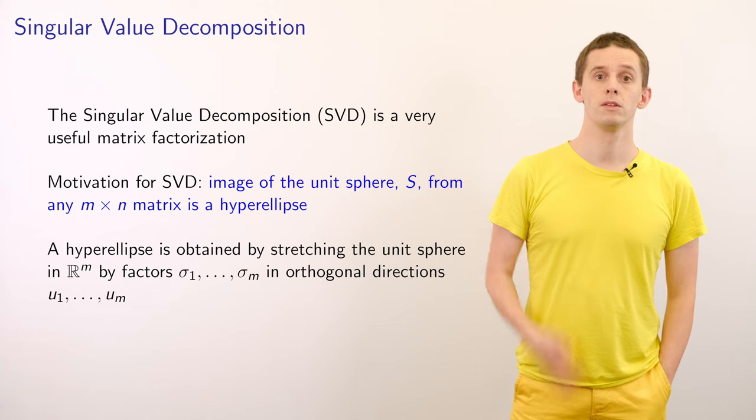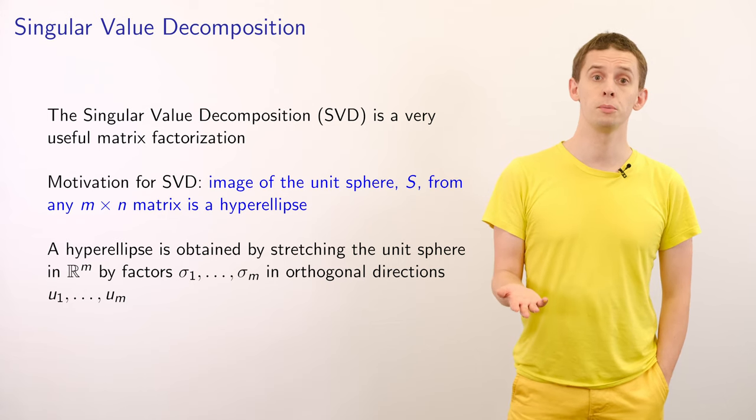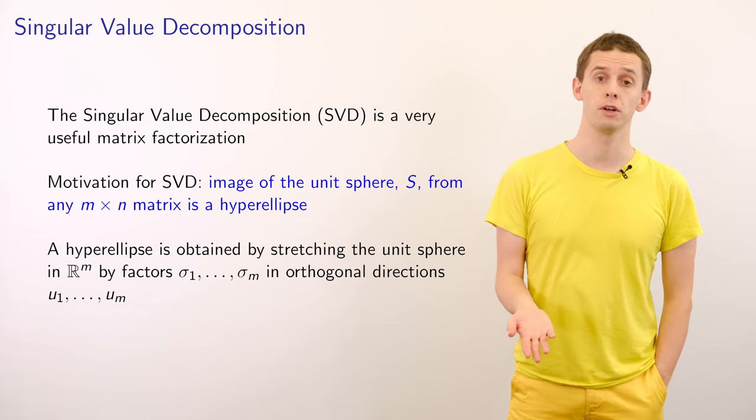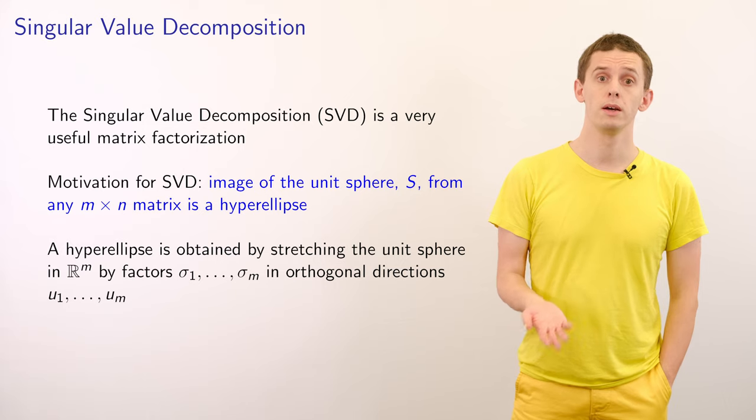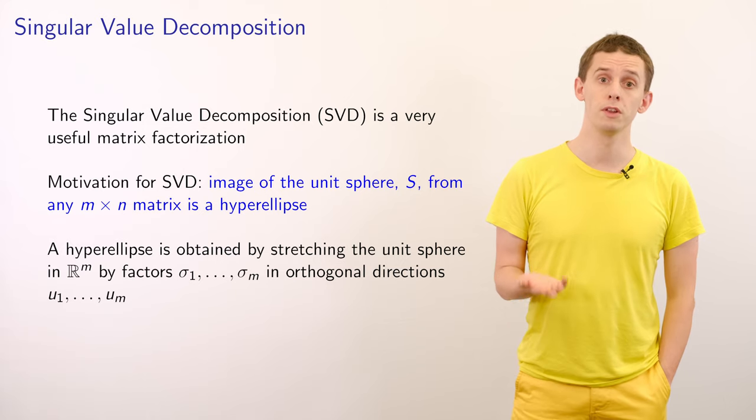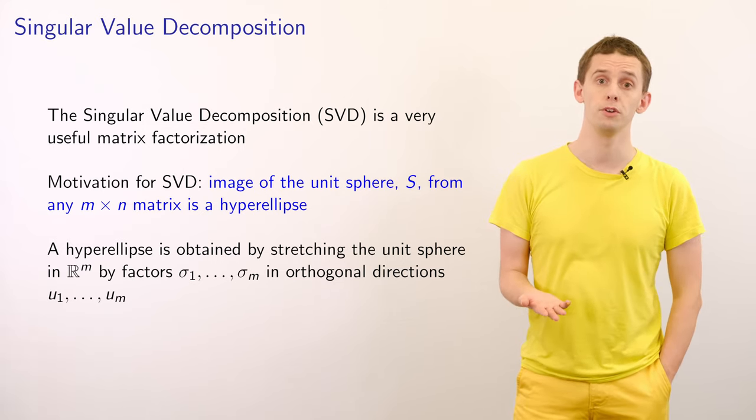We'll first introduce the SVD and then we'll show how it has many useful properties, such as allowing us to calculate the condition number of a matrix, or allowing us to calculate the pseudo-inverse of a matrix efficiently. The singular value decomposition is a really useful matrix factorization, and the starting point for it is really geometrical in origin.